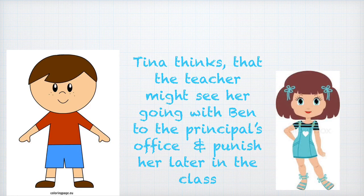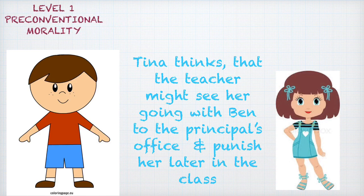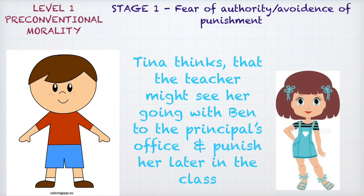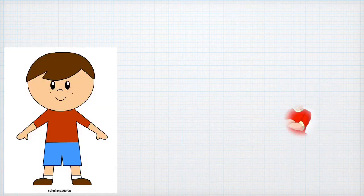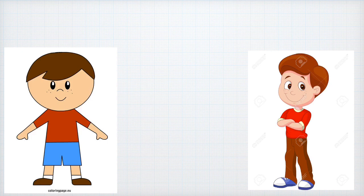Ben's friend Tina thinks that the teacher might see her going with Ben to the principal's office and later on might punish her for doing so. Hence, she refuses to go with Ben. According to Kohlberg's theory of moral development, Tina's response is indicative of Stage 1 of pre-conventional morality, where her behavior is primarily guided by her desire to avoid punishment from the teacher.